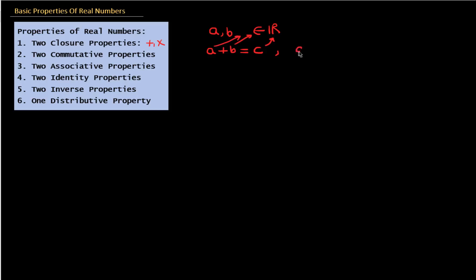Similarly, if we multiply A and B, and A and B are real numbers, and their product is any number D, then D will also be a real number. So this is the closure property for addition and the closure property for multiplication.